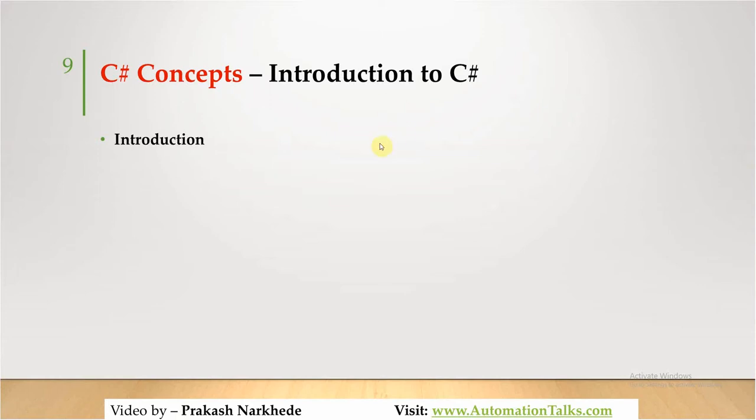Why C#? C# is the first component-oriented language in the C or C++ family. C was procedural, C++ wasn't completely object-oriented, but C# is component-oriented and object-oriented programming. C# is type-safe.